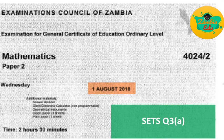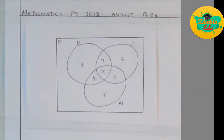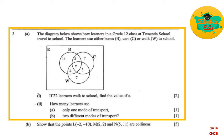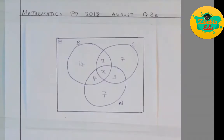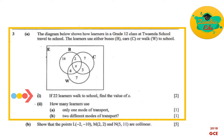This is mathematics paper 2, 2018 GCE question 3a. We have a Venn diagram under consideration. The diagram shows how learners at two schools travel to school — they use either buses, cars, or walk. The question asks: if 22 learners walk to school, find the value of X.